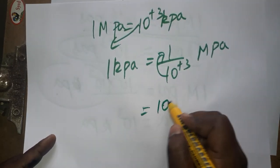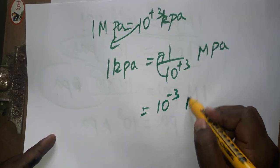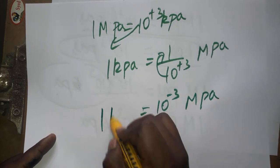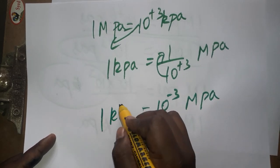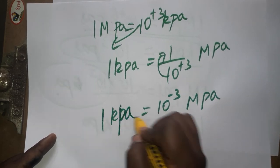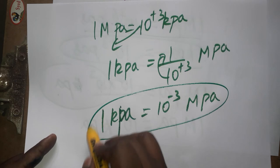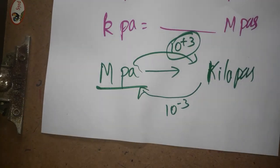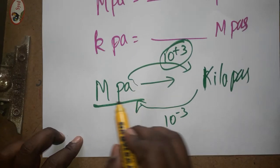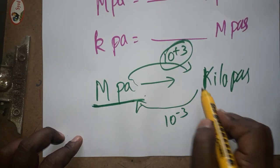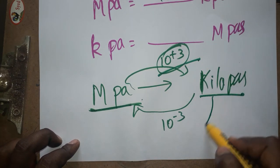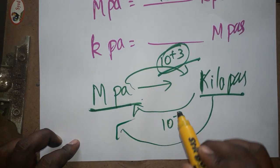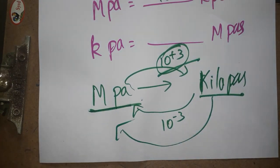After cross multiplication, 1 kilopascal equals 10 to the power of minus 3 megapascals. So to summarize: megapascal to kilopascal uses 10 to the power of plus 3, and kilopascal to megapascal uses 10 to the power of minus 3.